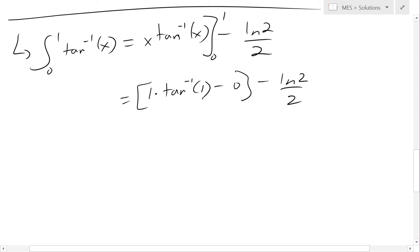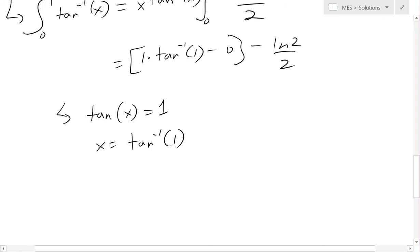So now inverse tan of 1, what this is saying is, it's basically when you look at the regular tan function, tan of x equals 1. In this, this is right here, x is equal to inverse tan of 1. So basically what is the x or the angle when the ratio is 1?